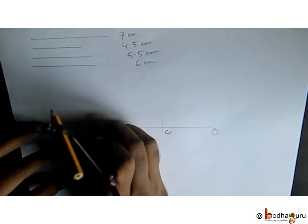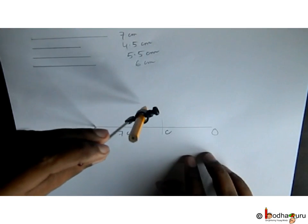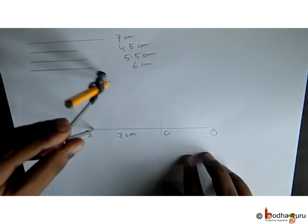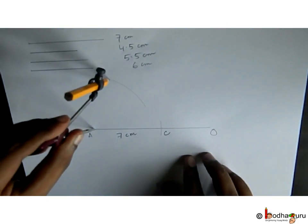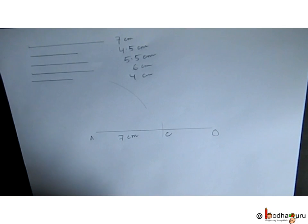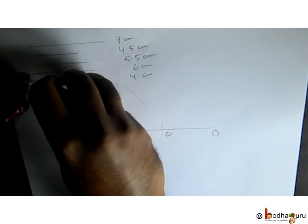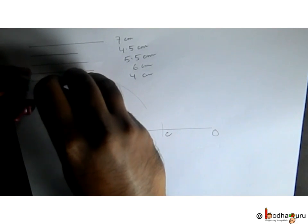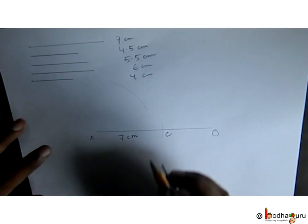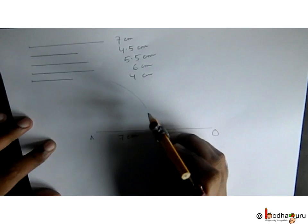As AD would be on this side, now we take 4 centimeter radius in compass, put needle on C and make an arc that intersects previous arc.